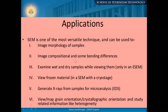SEM is used to image the morphology of samples, image composition, examine wet and dry samples while viewing them, view frozen material with cryo-SEM, and generate X-rays from samples for micro-analysis using energy dispersive spectroscopy (EDS) to get compositions. Maps can also be used to determine crystallographic orientation. For example, in our own work, we have done low-salinity water flooding and scanned clay samples before and after flooding, using SEM images to justify certain observations.